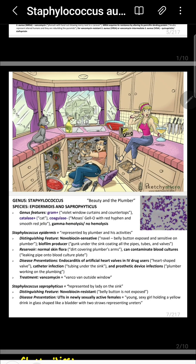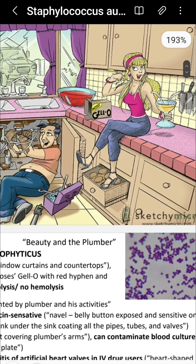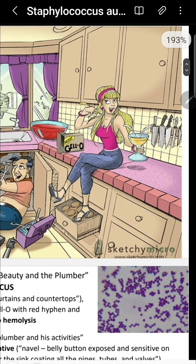Now let's talk about Staphylococcus saprophyticus, remembered by a hip-hop girl mnemonic. It is a gram-positive coccus in clusters. Importantly, both Staph saprophyticus and Staph epidermidis are coagulase negative, symbolized by jelly that has not hardened.